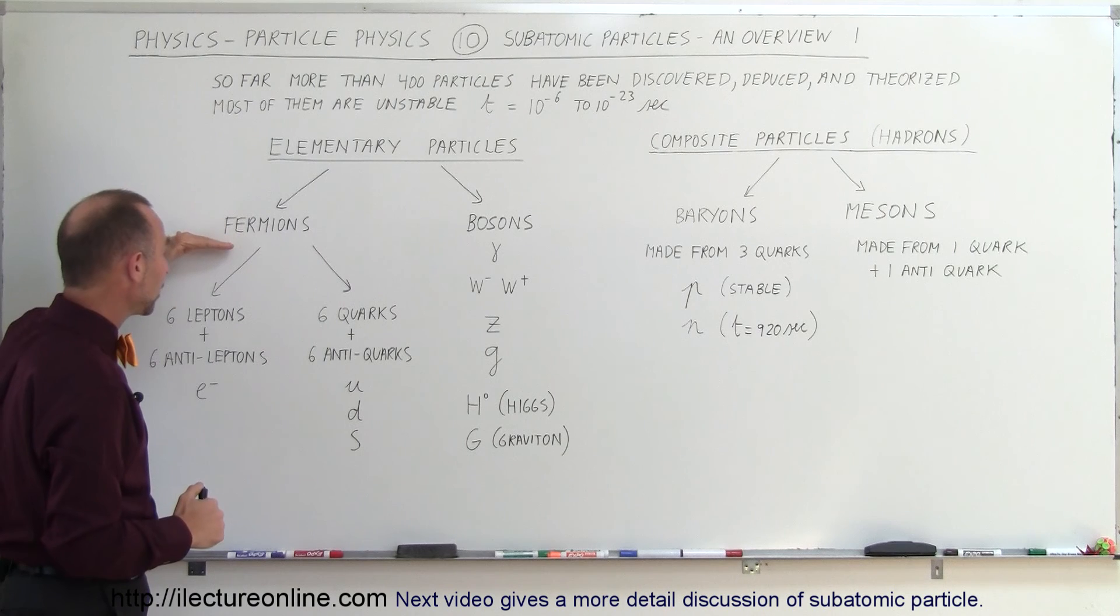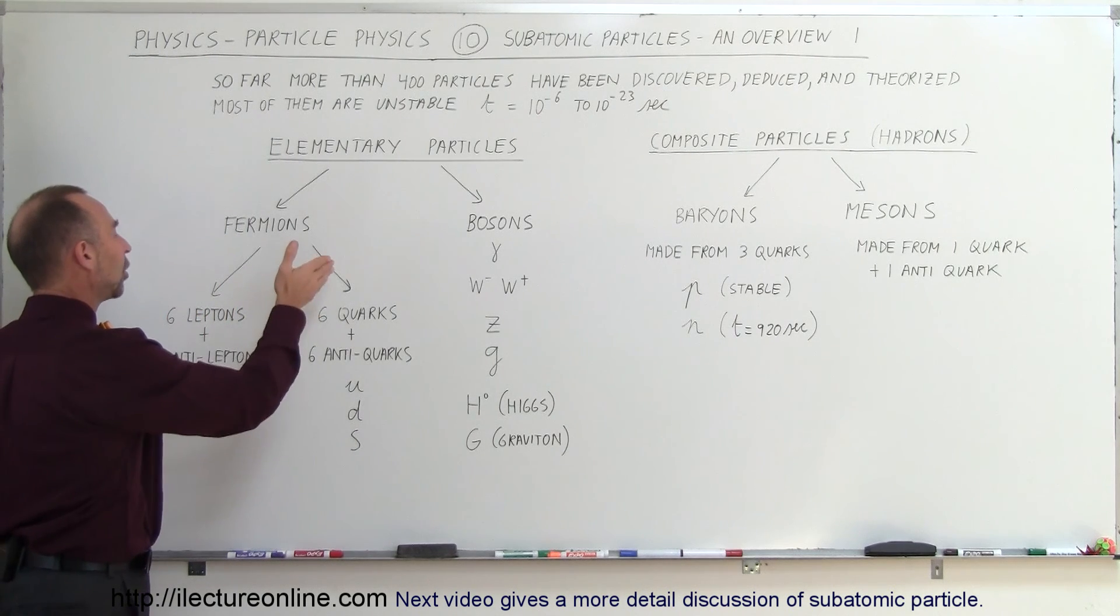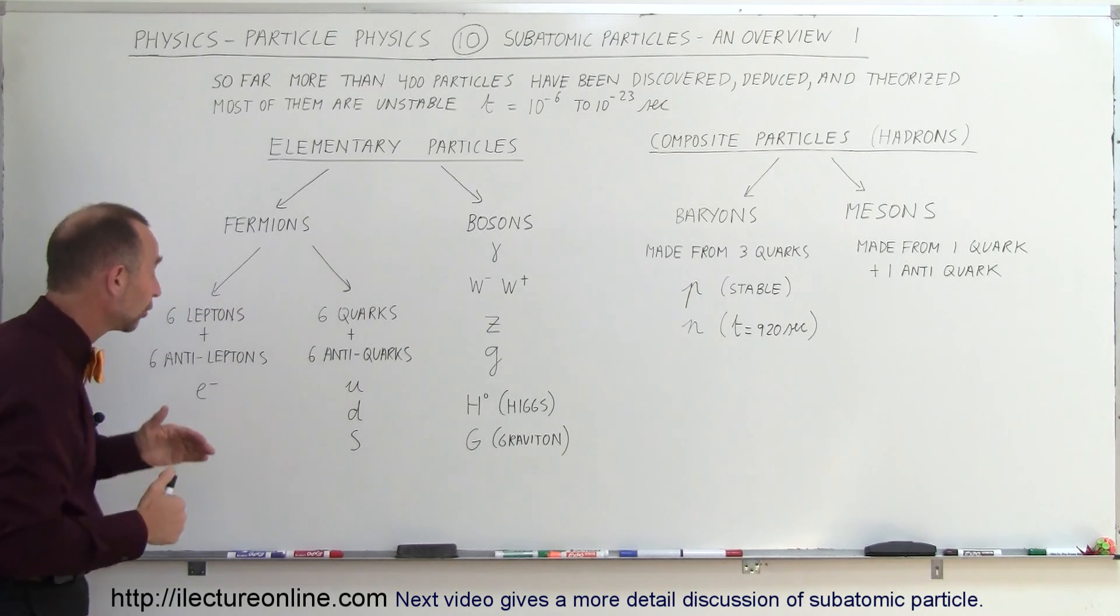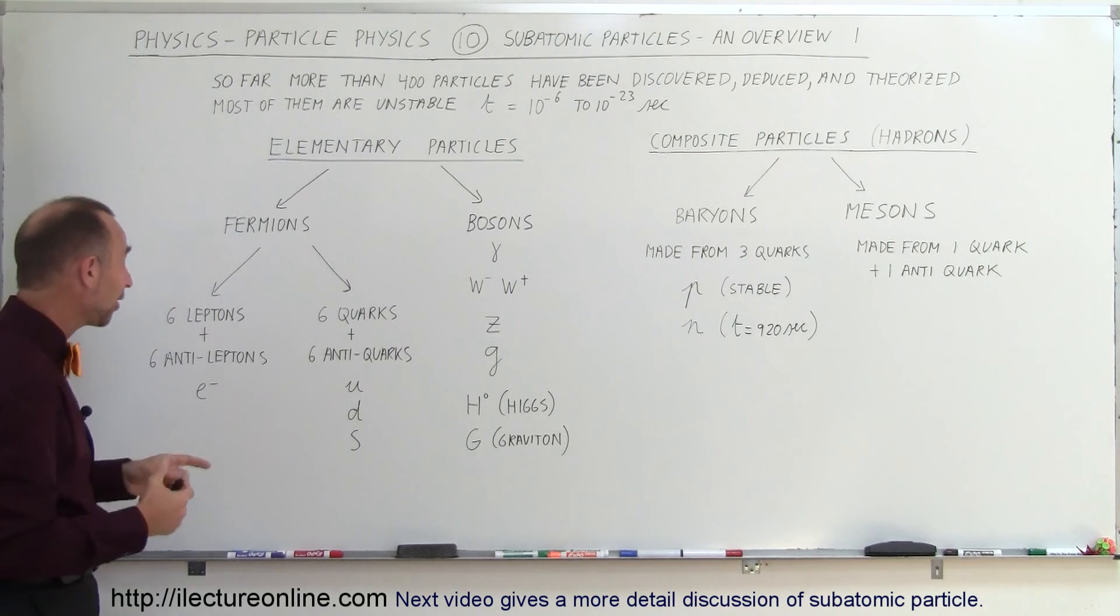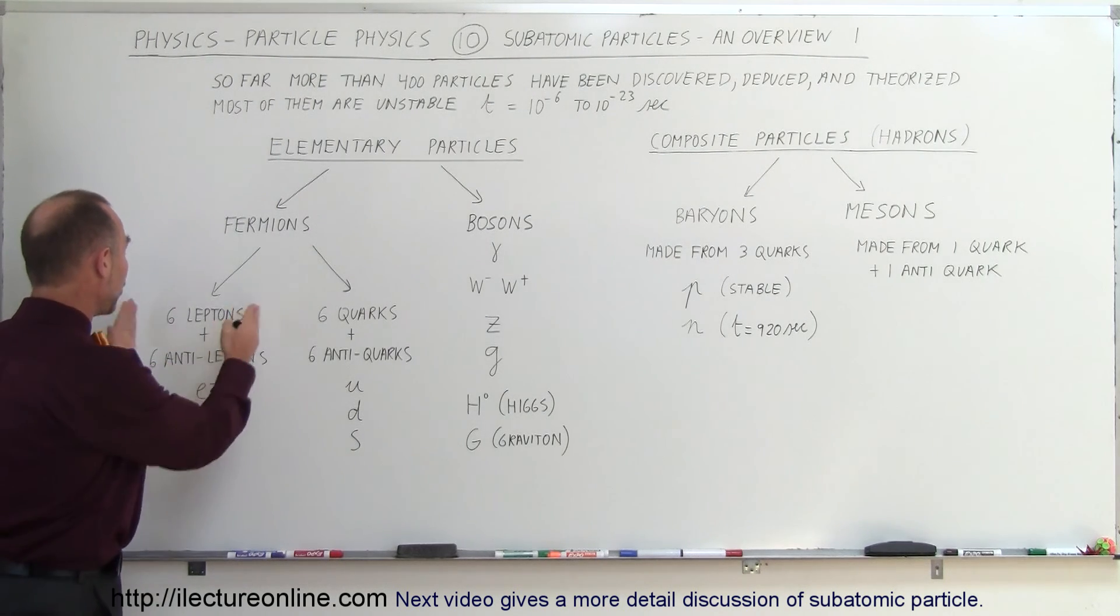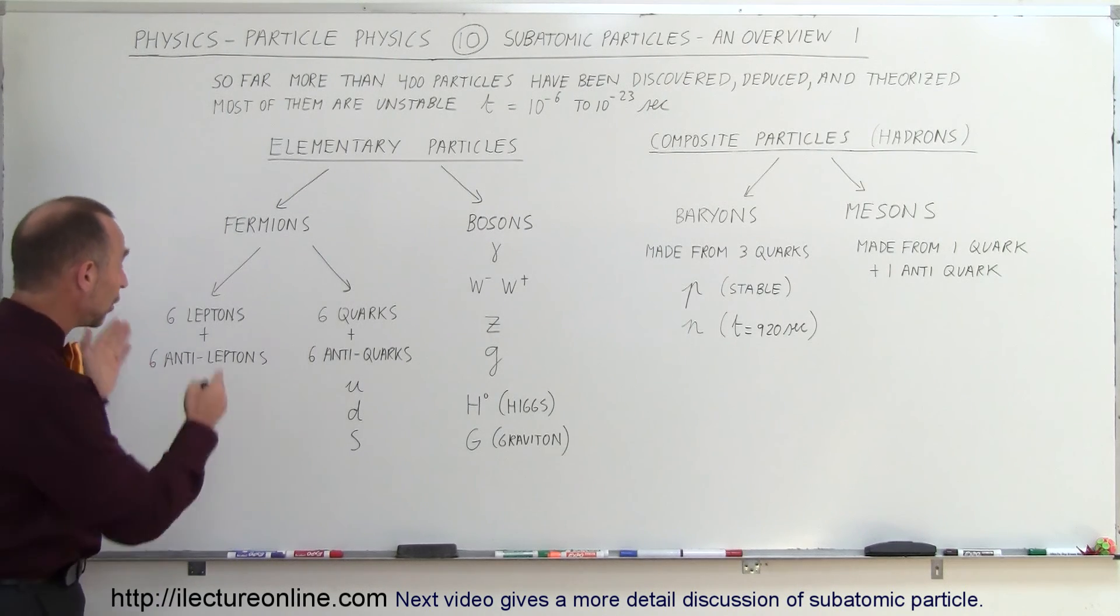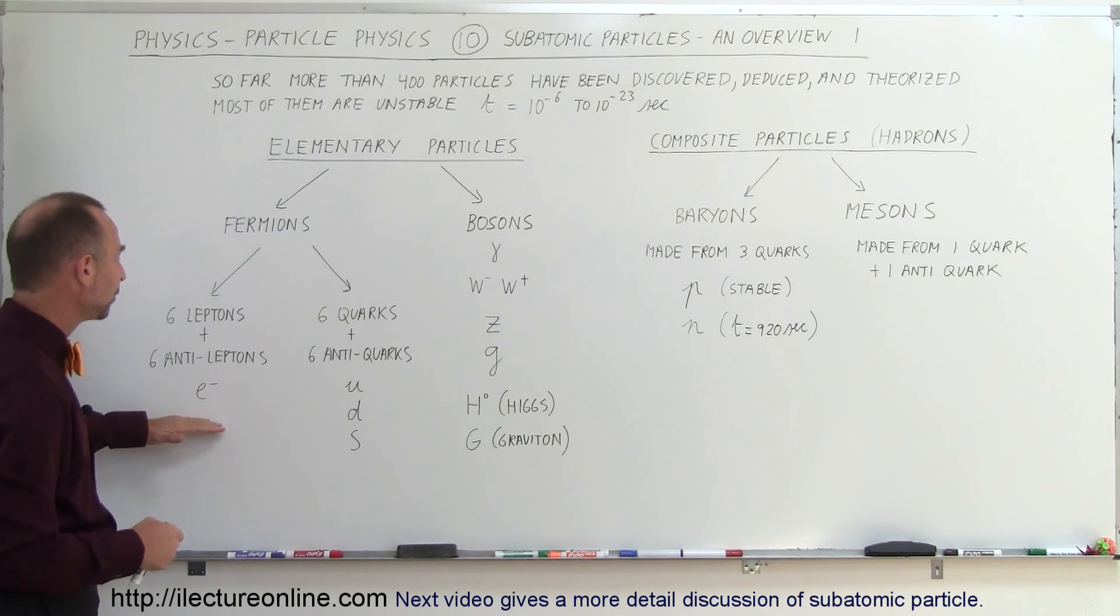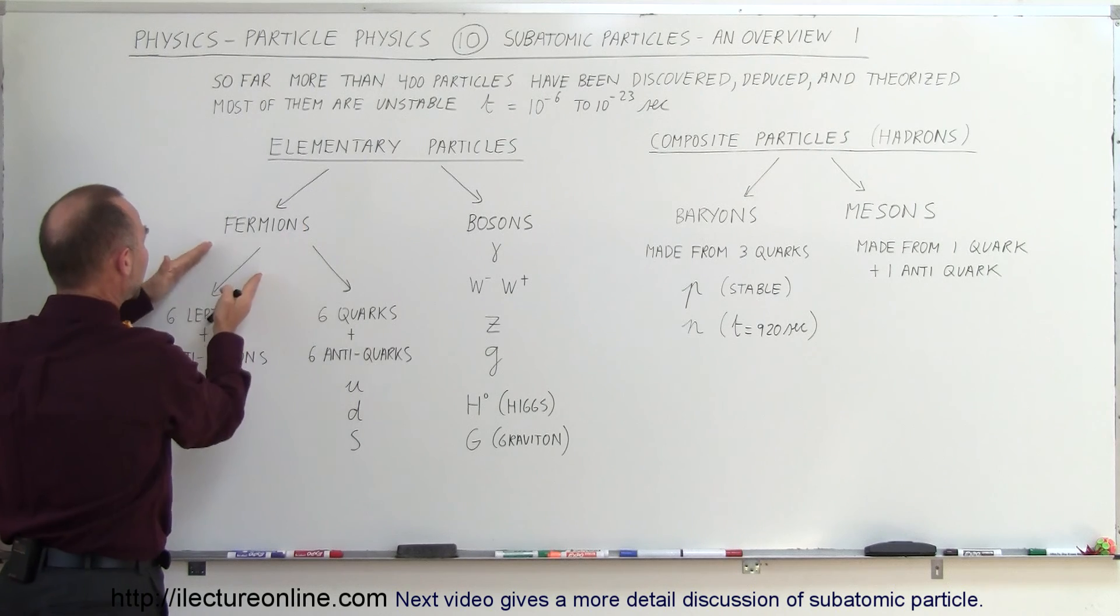Now, on the fermions, we have some that are called leptons and some that are called quarks. There's six leptons and, of course, for every particle there's an antiparticle. Therefore, there must be six antileptons. The most famous of those leptons is, of course, the electron. The electron falls in the classification of leptons and there's five other particles that also fall in that classification. We'll show what they are later in a different video. So of the elementary particles, we have fermions. Of the fermions, we have leptons and quarks.